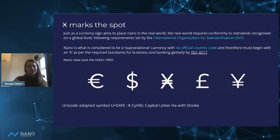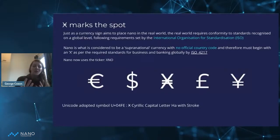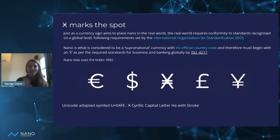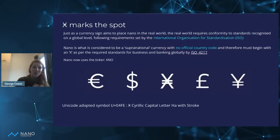To rewind just a second — due to the ISO standards, we had to change our ticker to be XNO. Nano is considered to be a supranational currency, so it has no official country code and therefore must begin with an X, as per the required standards for business and banking globally by ISO 4217. There's lots of information around that, so please DM me if you'd like to know more.